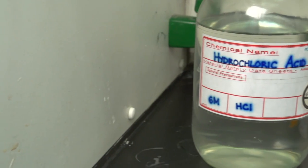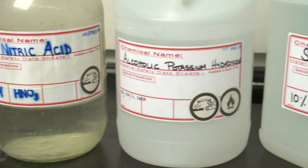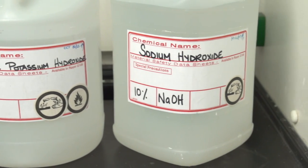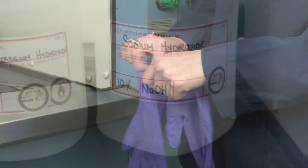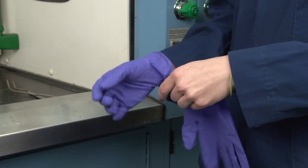If glassware becomes too dirty or contains chemical residue that cannot be washed with detergent and water, it has to be cleaned using a chemical cleaning agent. Chemical cleaning agents are corrosive so the use of appropriate gloves is mandatory.